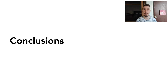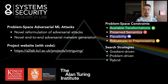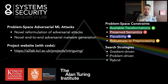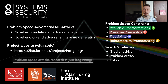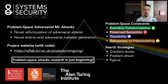In conclusion, we proposed a novel reformulation of adversarial attacks extending to include the added complexity of problem space attacks, and used it to identify ways to improve on past work and develop a new attack in the Android malware domain. We also have a project website with the code released on the 1st of May. Problem space attack research is just beginning, and there's exciting stuff ahead. Thanks very much for listening.